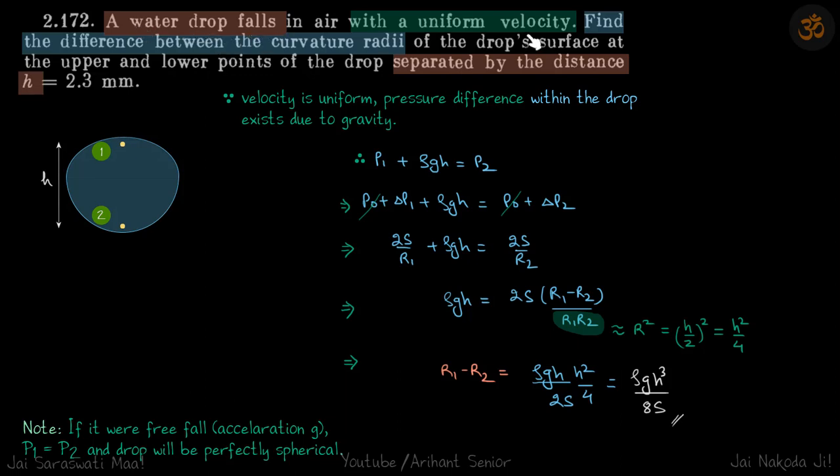A water drop falls with a uniform velocity. Find the difference between the curvature radii separated by distance h within the drop.